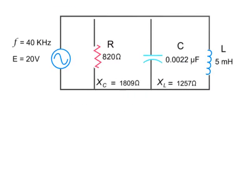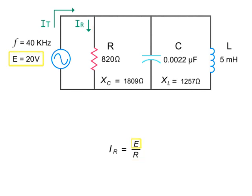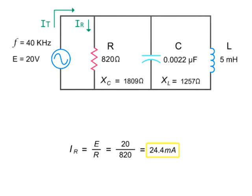Using similar equations, you can also solve for the various current values in a parallel circuit. In this case, we'll use the same resistance values obtained previously for the series circuit. To calculate the current through the resistor, divide the source voltage by the resistance at the resistor, which is 20 volts divided by 820 ohms, which equals 24.4 milliamps.